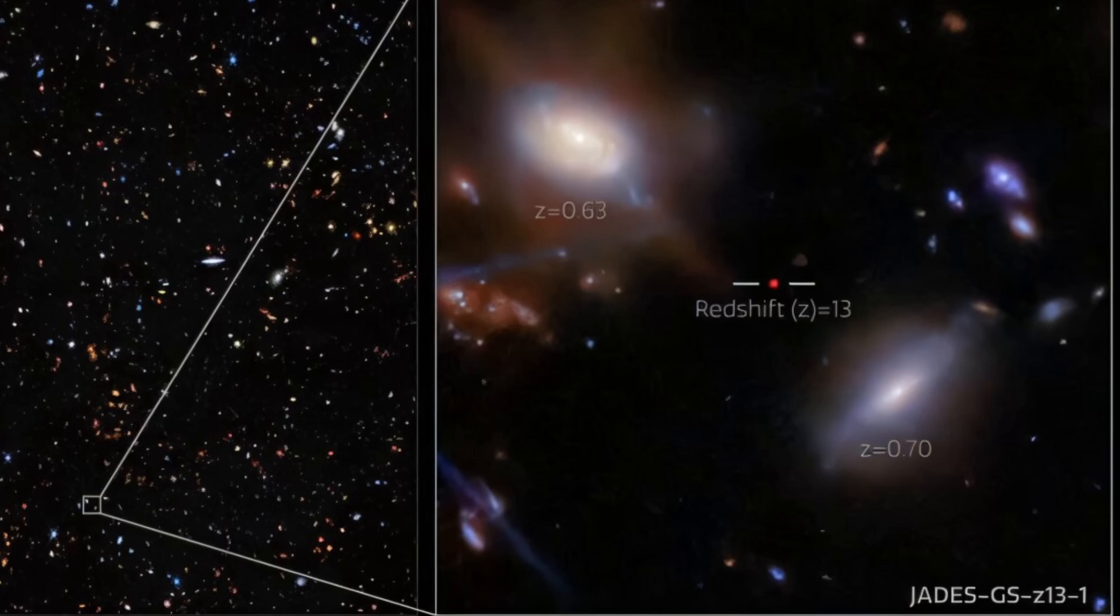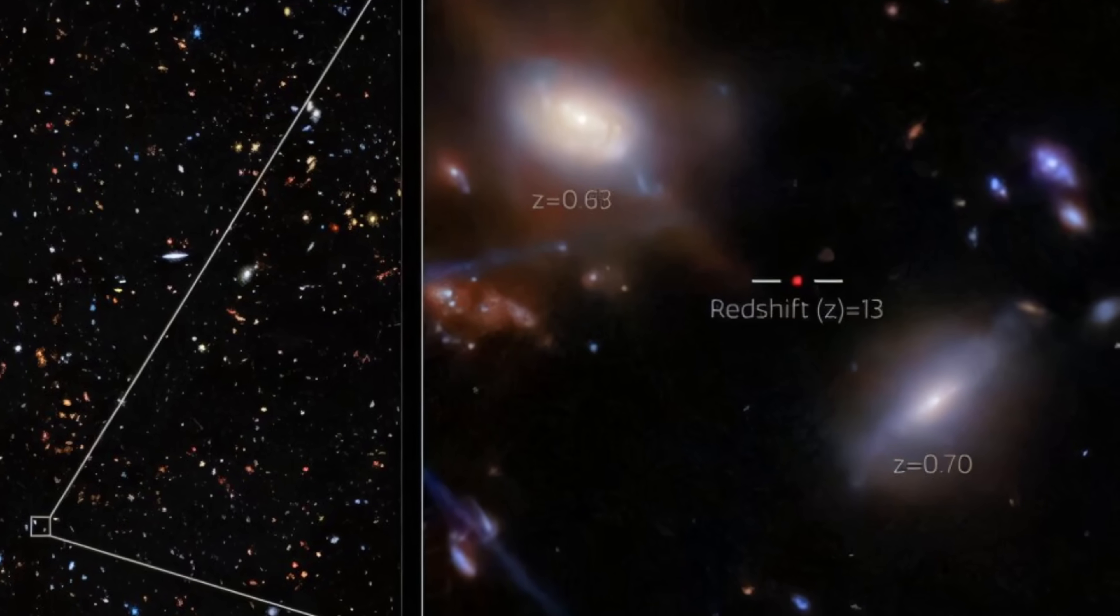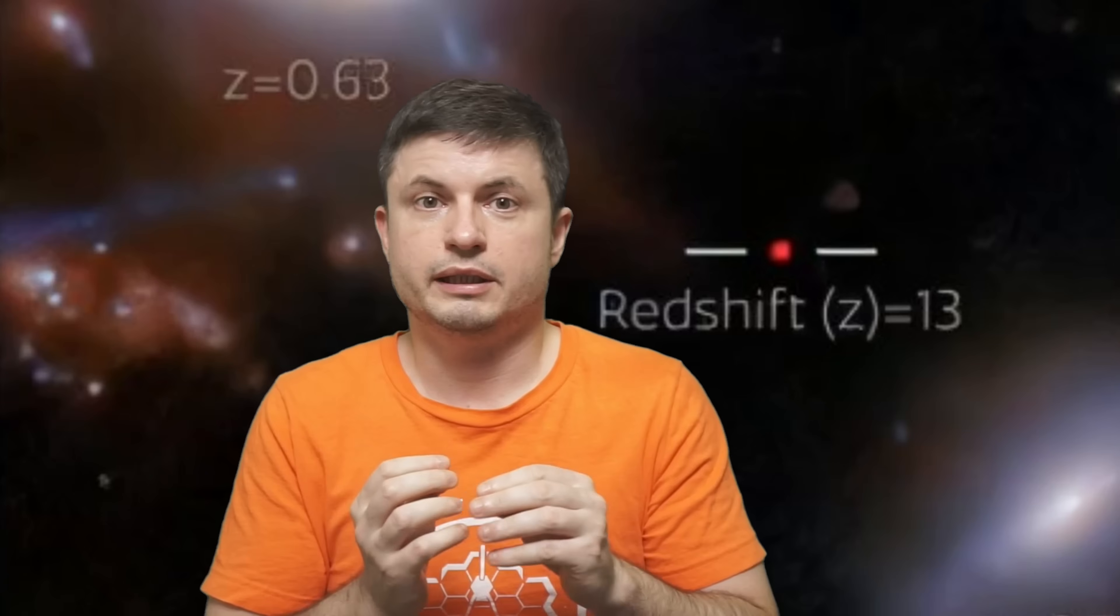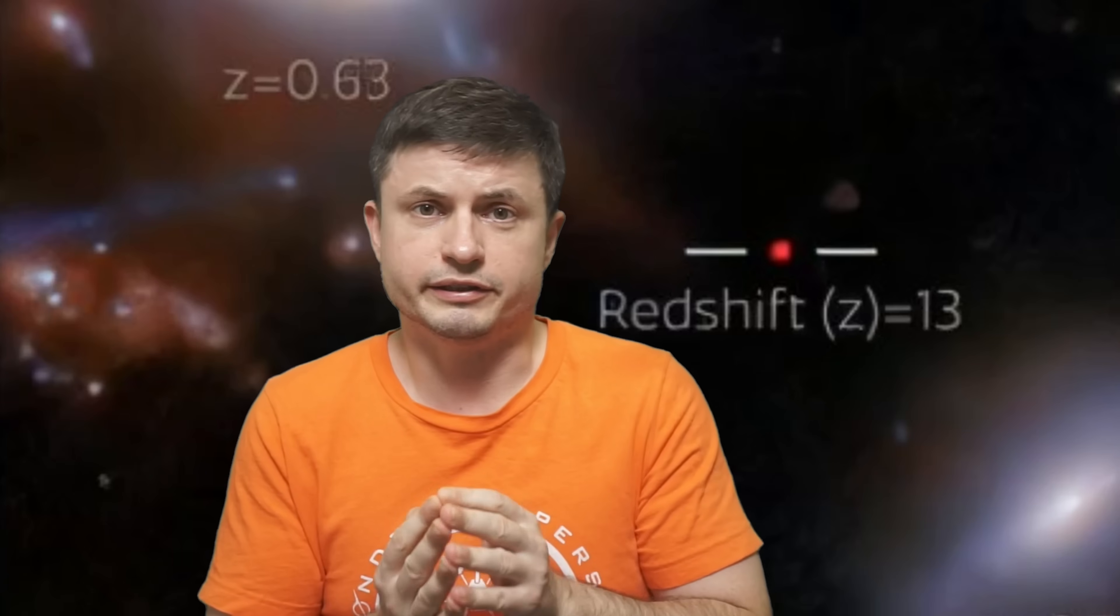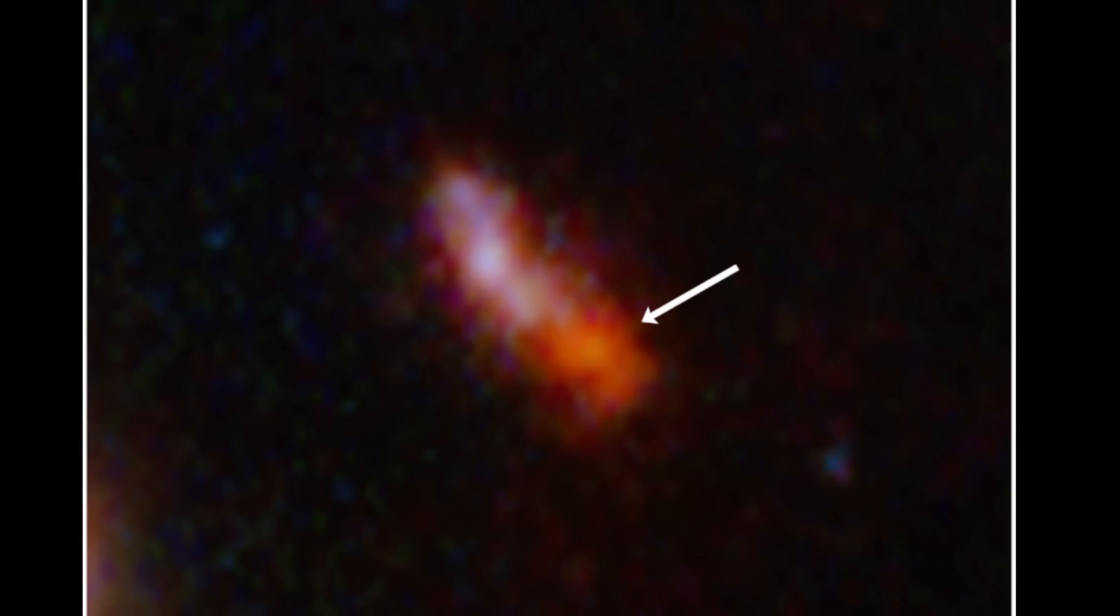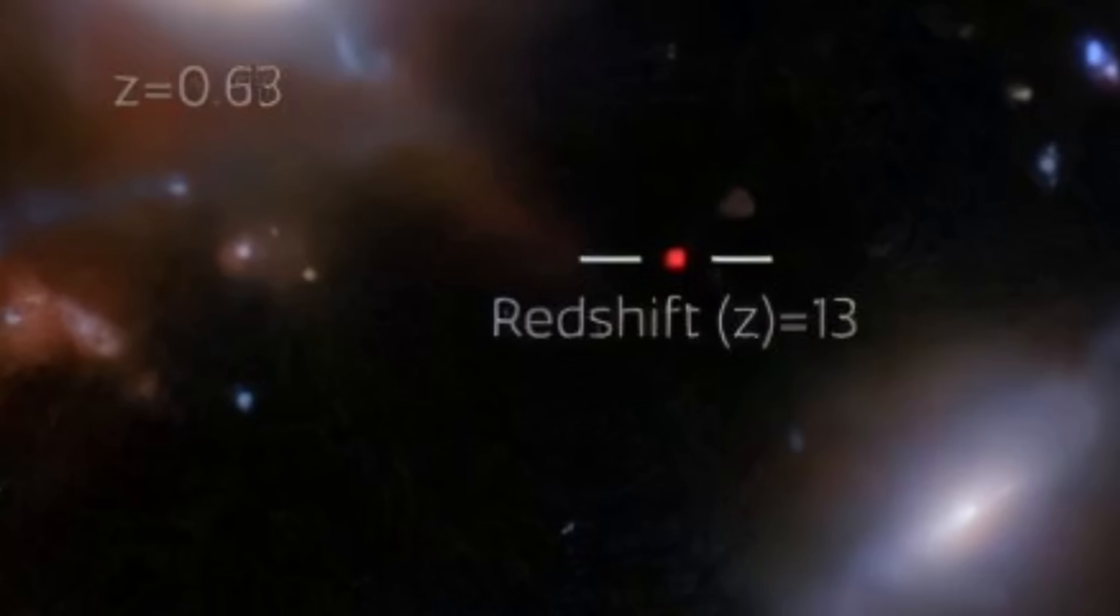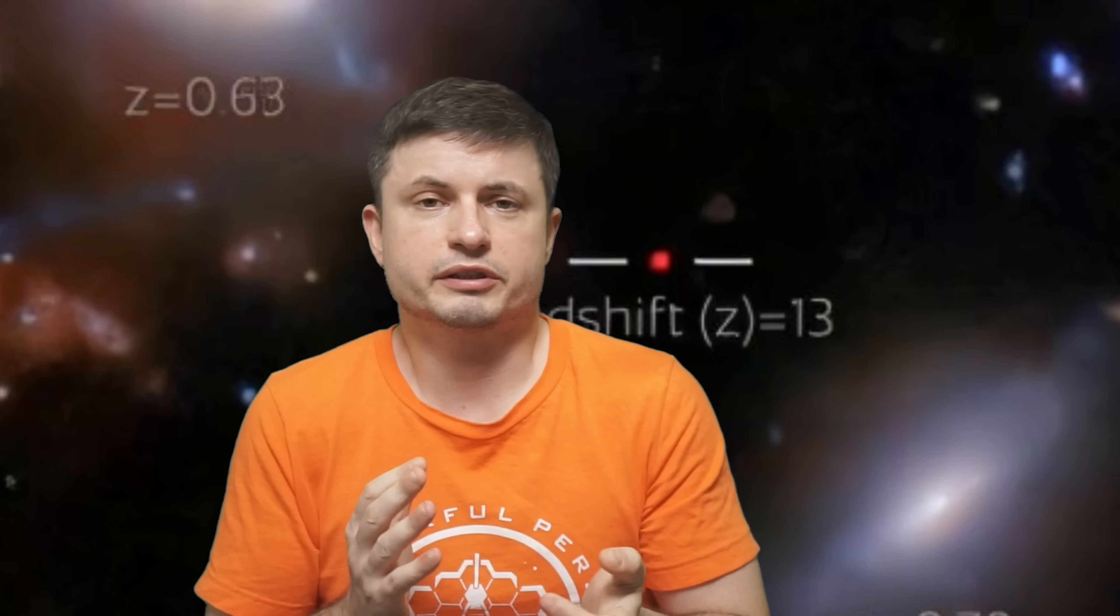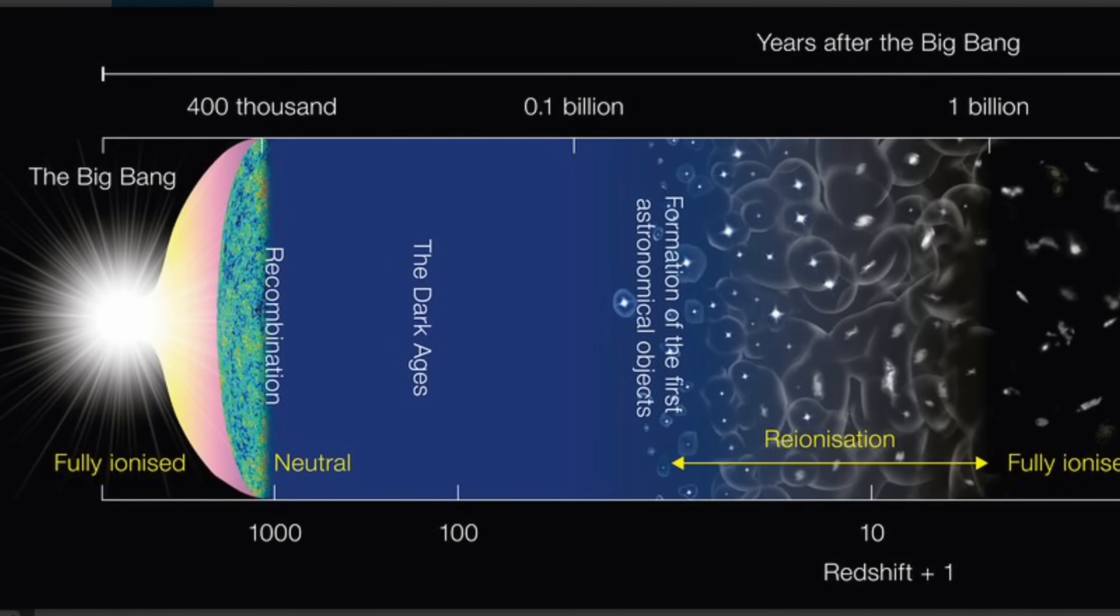But this galaxy, JADES-GS-z13-1, is a little bit closer. It's still about 33 billion light years away from us, but in terms of when it existed, the picture from the most distant galaxy is coming from the universe that's only about 294 million years old, whereas here the universe is about 330 million years old. So approximately 35 million years difference. Technically this is basically the same period, but more importantly, this is basically the end of the so-called dark ages and the beginning of reionization.